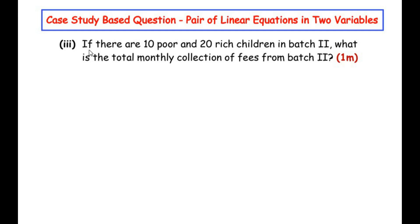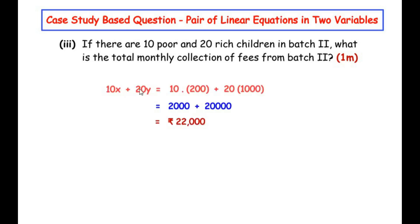For the last sub-question: if there are 10 poor and 20 rich children in batch 2, what is the total monthly collection of fees? The expression for total fees is 10x + 20y. Substituting x = 200 and y = 1,000: 10 × 200 + 20 × 1,000 = 2,000 + 20,000 = rupees 22,000. So the total monthly collection from this new batch 2 is rupees 22,000.